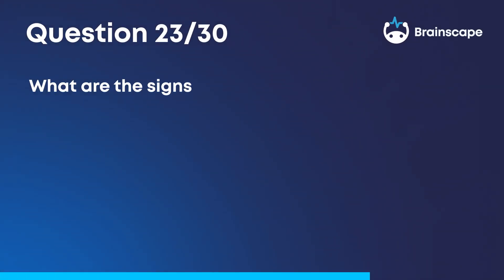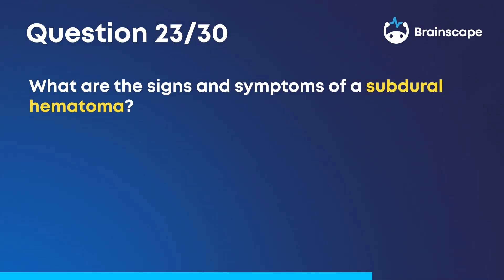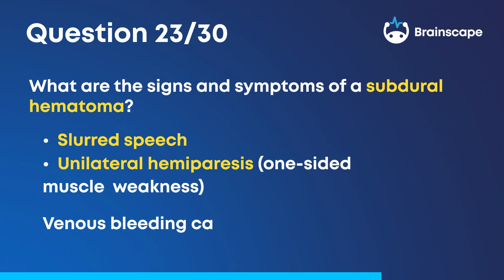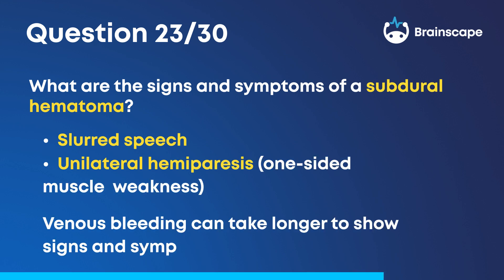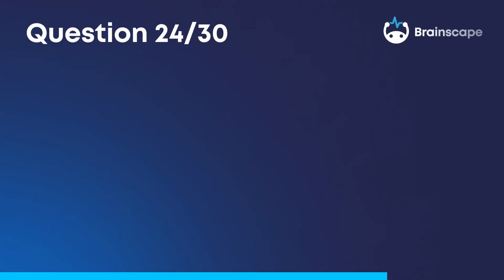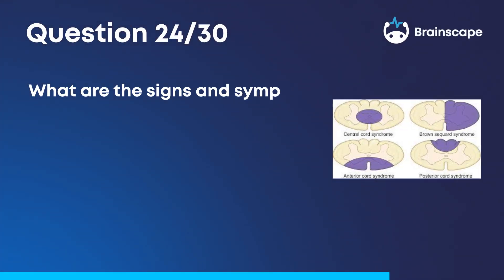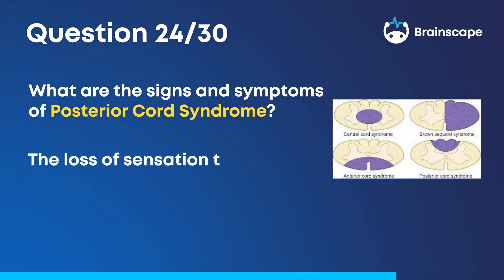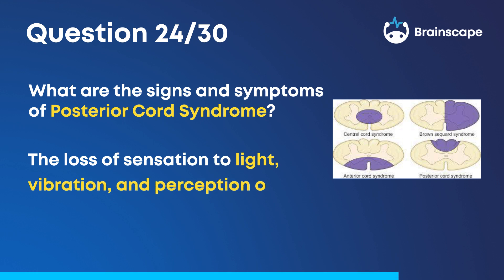Question 23. What are the signs and symptoms of a subdural hematoma? Slurred speech and unilateral hemiparesis, or one-sided muscle weakness. Venous bleeding can take longer to show signs and symptoms. Question 24. What are the signs and symptoms of posterior cord syndrome? The loss of sensation to light, vibration, and perception of one's body.